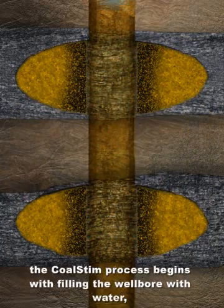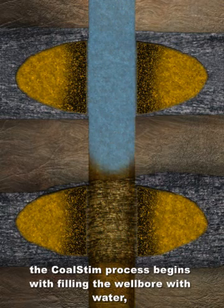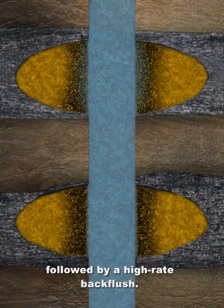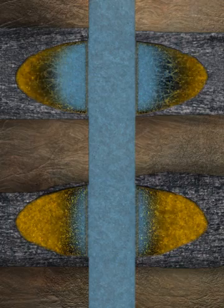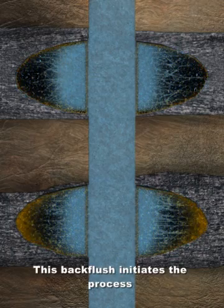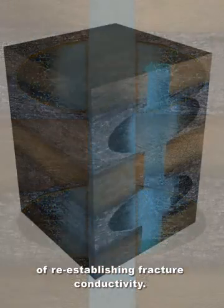To help remediate the damage, the coal stim process begins with filling the wellbore with water, followed by a high-rate backflush. This backflush initiates the process of re-establishing fracture conductivity.